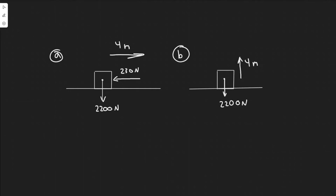Okay, so in this problem we're told a 2200 newton crate rests on the floor. How much work is required to move it at a constant speed? A, 4 meters along the floor against a drag force of 230 newtons, and B, 4 meters vertically.